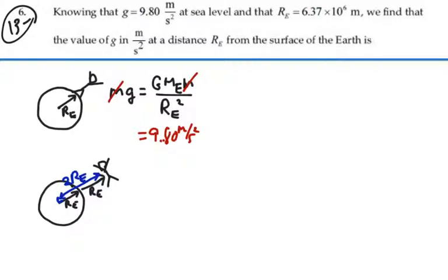So in this case, your mass times g prime, we'll say, is equal to G mass of the earth, your mass, over 2 times the radius of the earth squared.